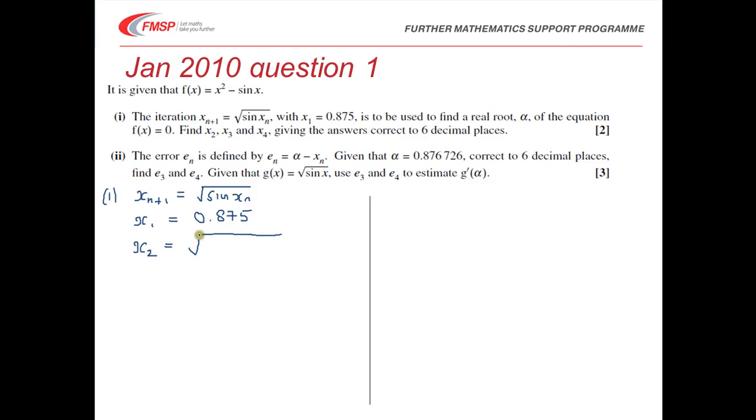So x_2 will be the square root of sin of 0.875. Just make sure you have your calculator set in radians.